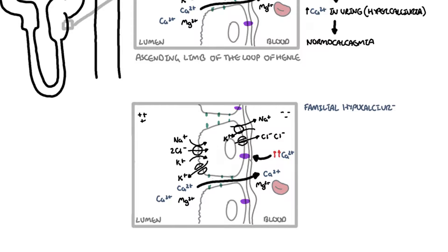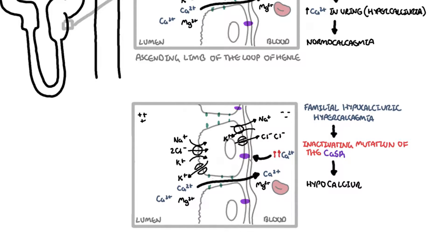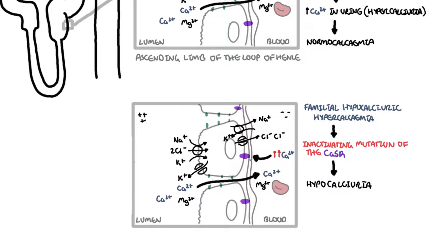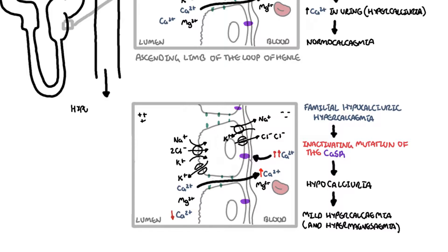In familial hypocalciuric hypercalcemia, there is an inactivating mutation of the calcium sensing receptor. The receptors don't work, and you end up reabsorbing calcium and magnesium, leading to hypocalciuria, mild hypercalcemia, and hypermagnesemia. It is an important concept to remember that familial hypocalciuric hypercalcemia, as the name suggests, causes hypocalciuria.